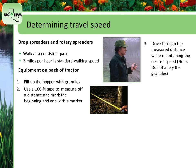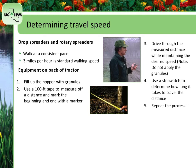Use a stopwatch to determine how many minutes and seconds it takes to travel the measured distance. Repeat this process two to three more times and calculate the average speed. Figure your travel speed by dividing your distance traveled by your average time.